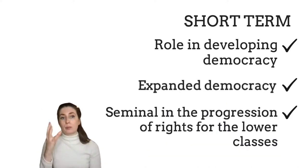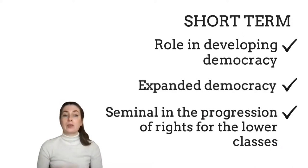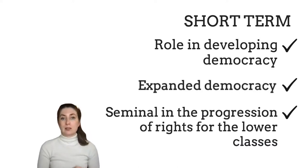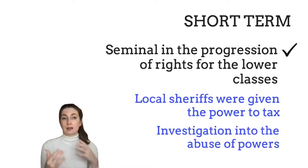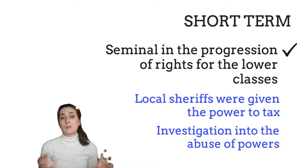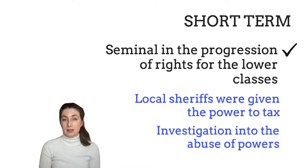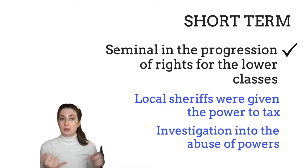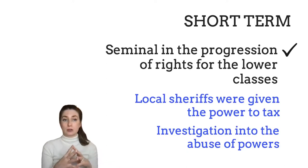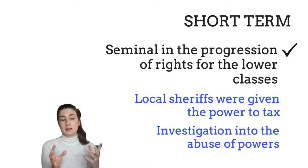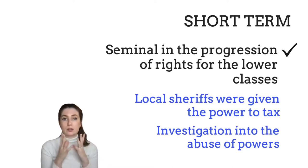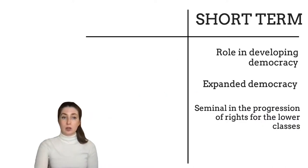Finally, this period is seminal — groundbreaking — in the progress of rights for the lower classes. Local sheriffs are given the power to tax, and for the first time there is investigation into the abuse of powers by local landlords. Lords and barons are being investigated for abusing the rights of the commoners, the peasants living on their land. This is absolutely seminal in the progress of these rights for the lower classes.